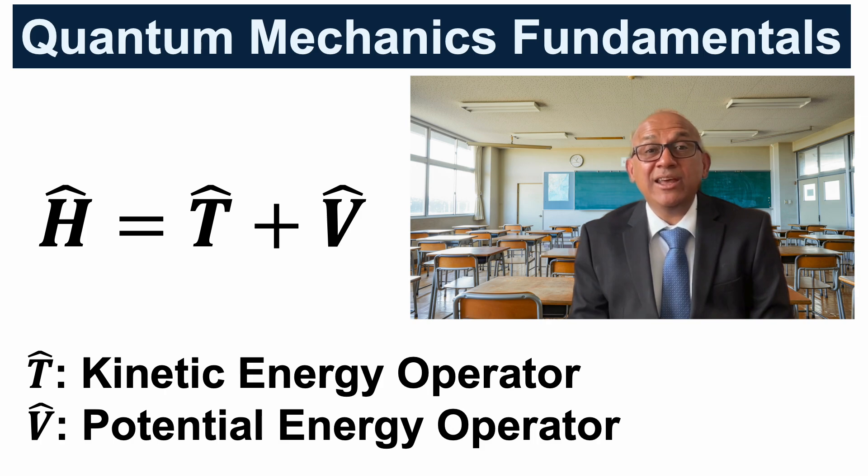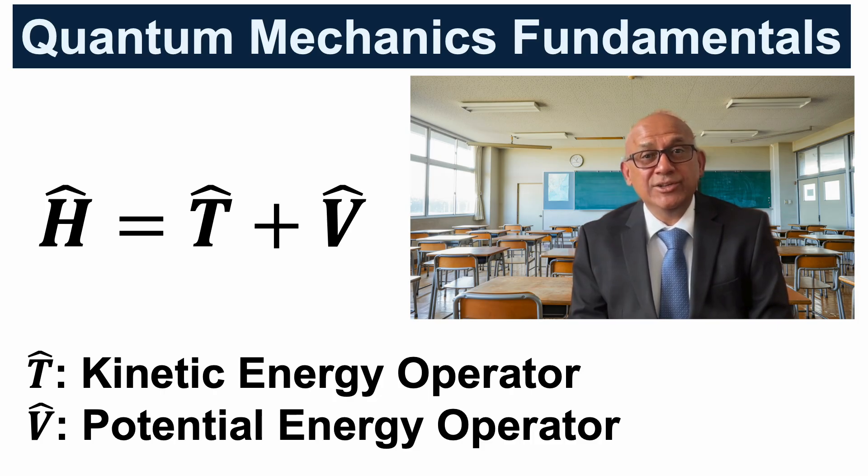It is written as Ĥ = T̂ + V̂, where T̂ is the kinetic energy operator and V̂ is the potential energy operator. So just like in classical physics, total energy is the sum of kinetic and potential energy, only here it is expressed in operator form.